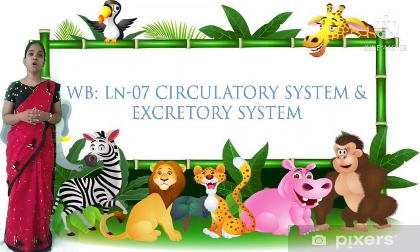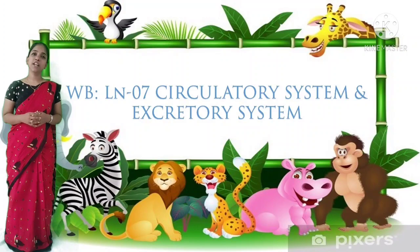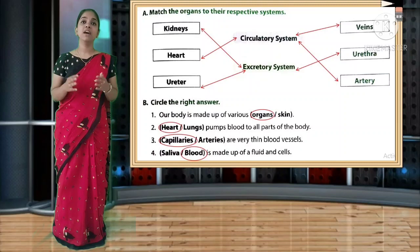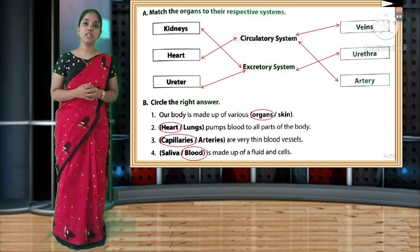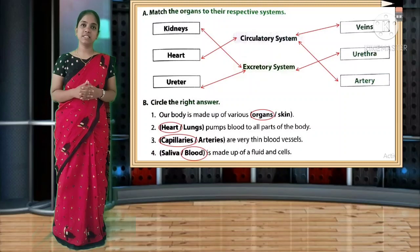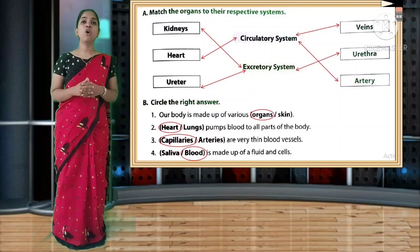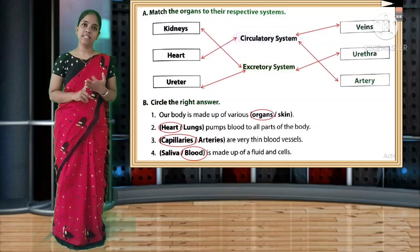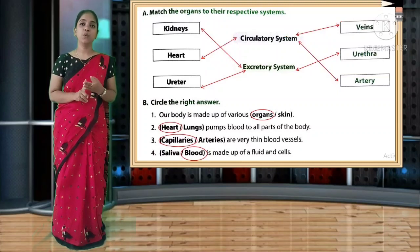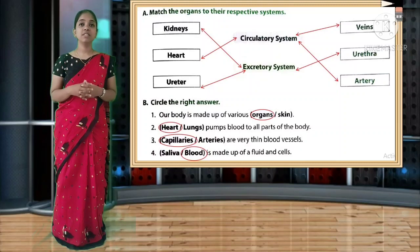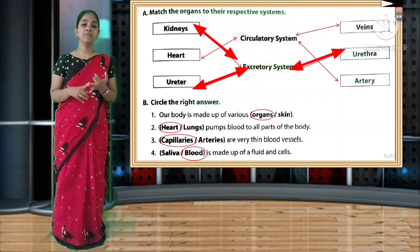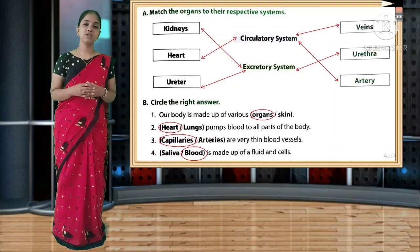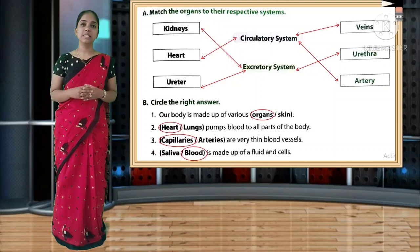Last workbook exercise: lesson 7 - Circulatory System and Excretory System. Match the organs to their respective system. Circulatory system: heart, arteries and veins. Excretory system: kidneys, ureter, urethra. We have to match each organ correctly to the particular system.